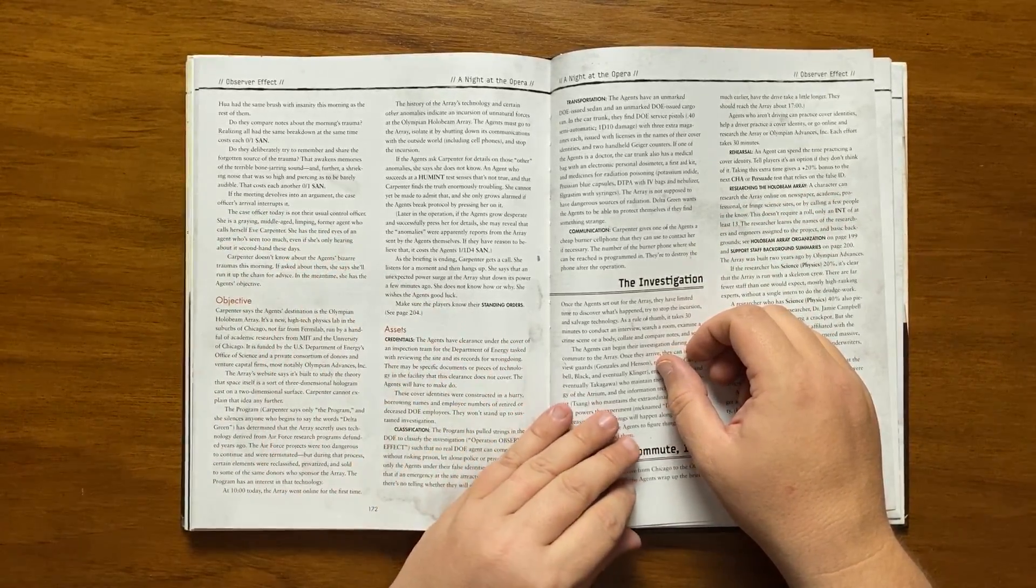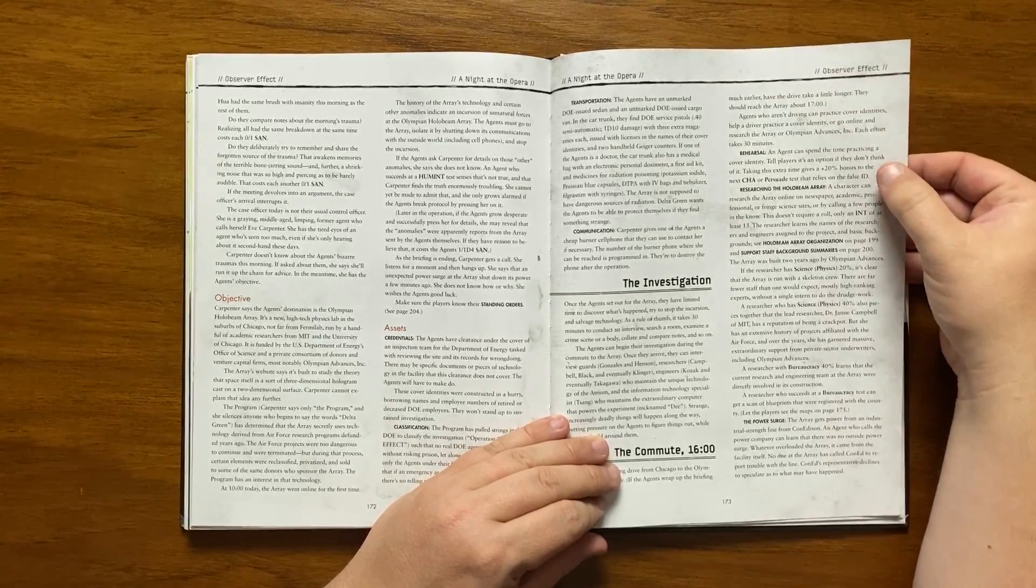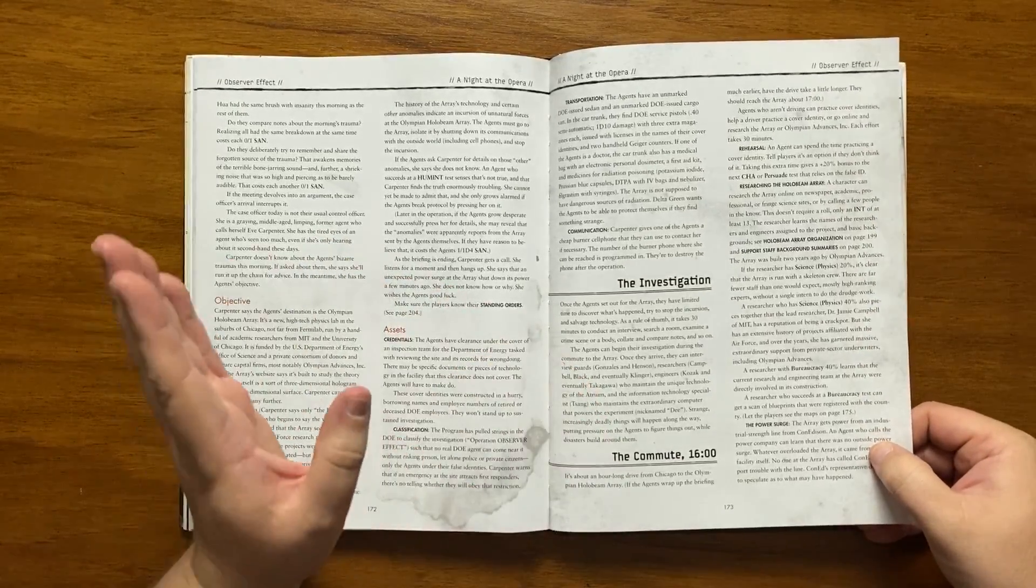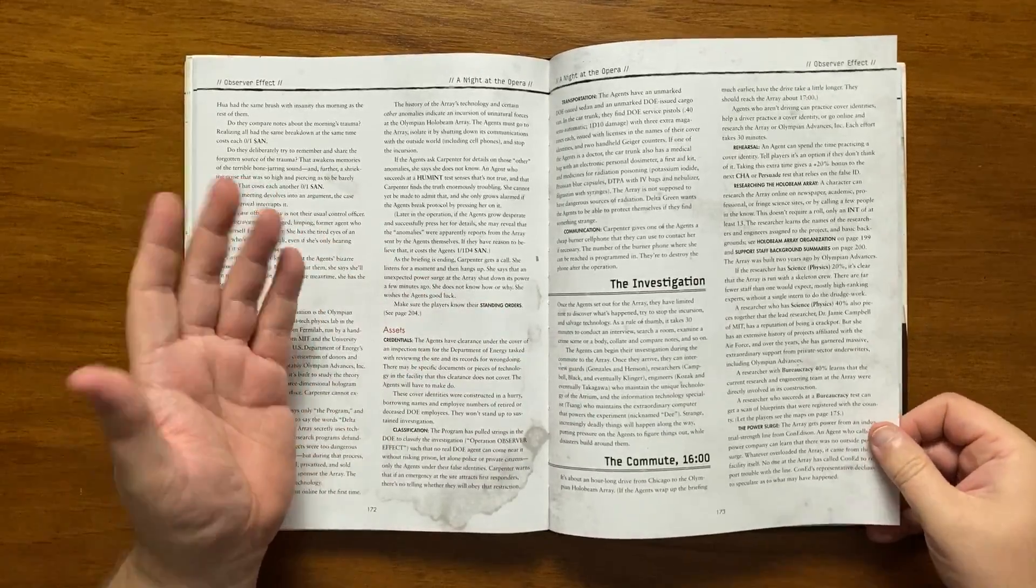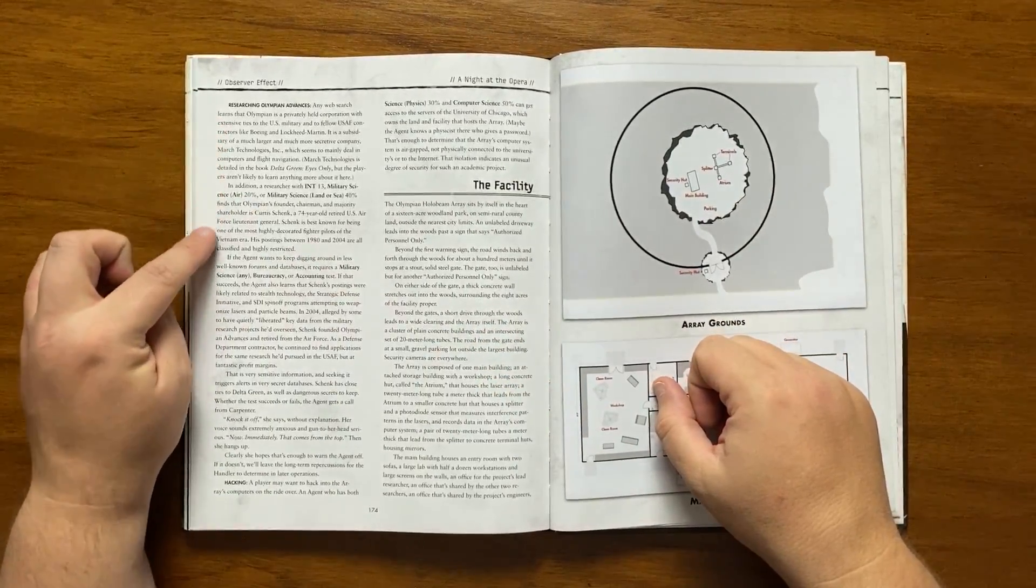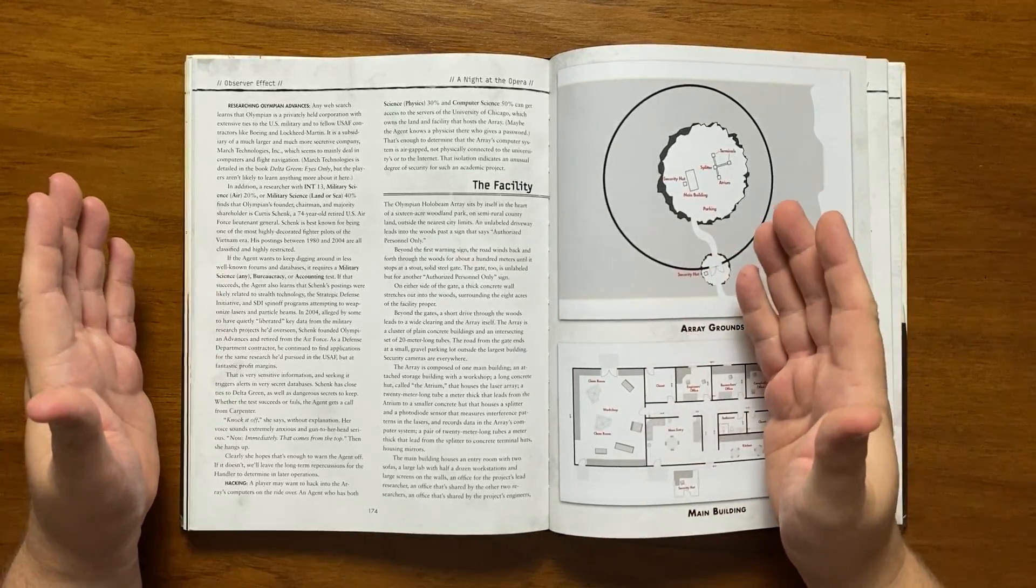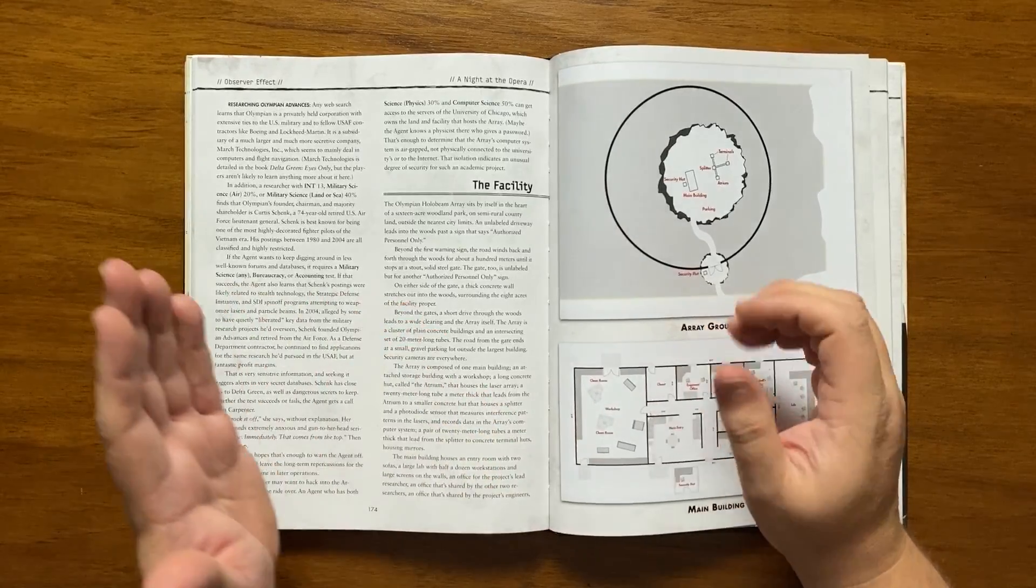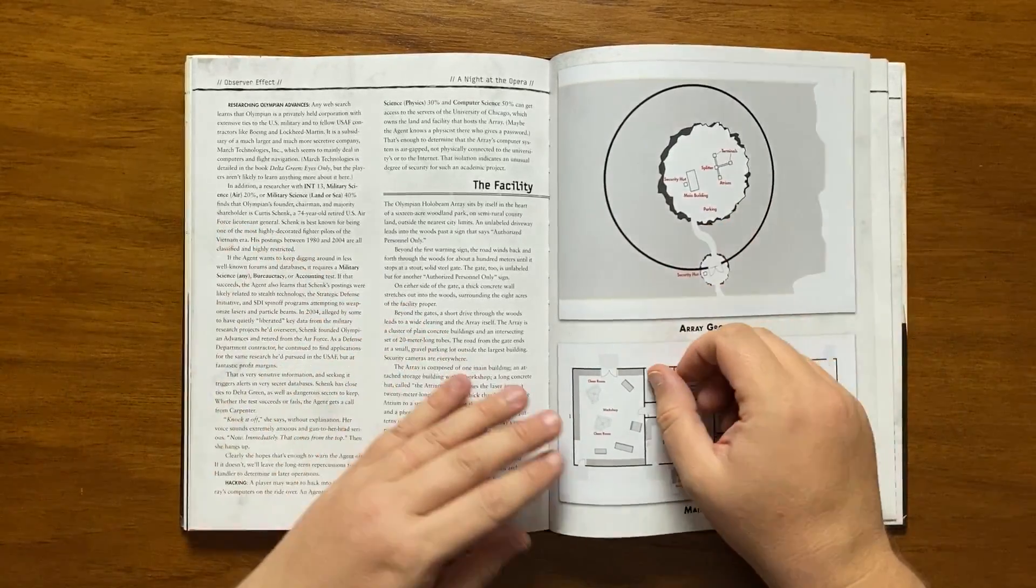They give some notes on what the agents can do while they are travelling, such as rehearsing their cover identity, researching the Array and even the power surge itself as this is monitored by Con Edison, with the right kind of roles of course. They can also look into Olympian itself and discover its connections to March Technologies Inc, though if they dig too deep they will get a call from Carpenter telling them to cease what they are doing. They can even hack the Array's computers if they have that skill set amongst them.